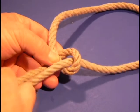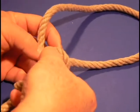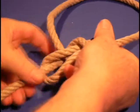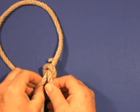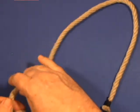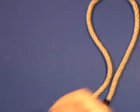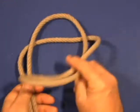Then go around behind the standing part and back in the eye. The advantage of this method is that it's what you would use for creating a triple bowline.